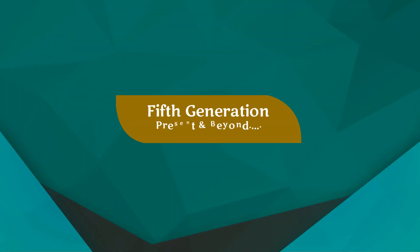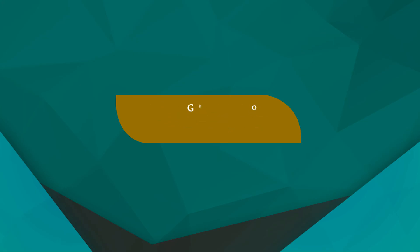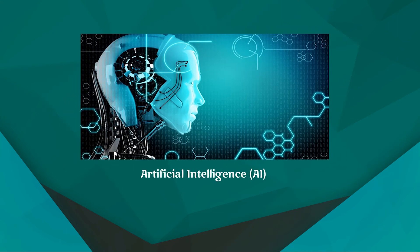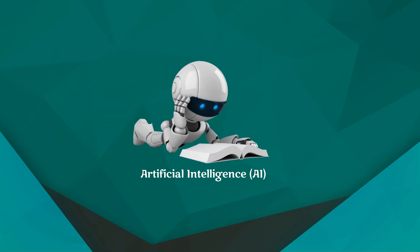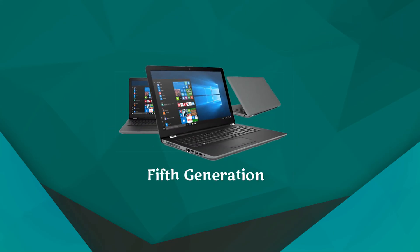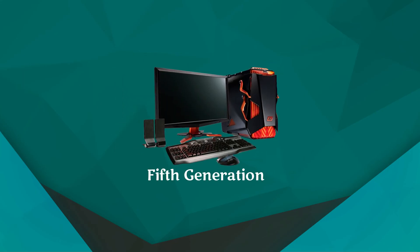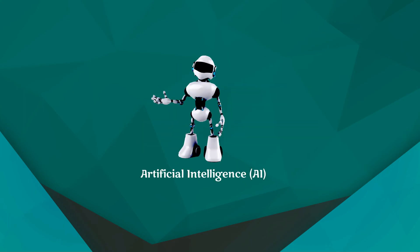Fifth generation: present and beyond. This generation is based on artificial intelligence, or AI — a new technology that makes computers think like humans. This generation is still in development. The goal is to develop devices which respond to natural language input and are capable of learning and self-organization. There are some applications such as robotics that are basically being used today.